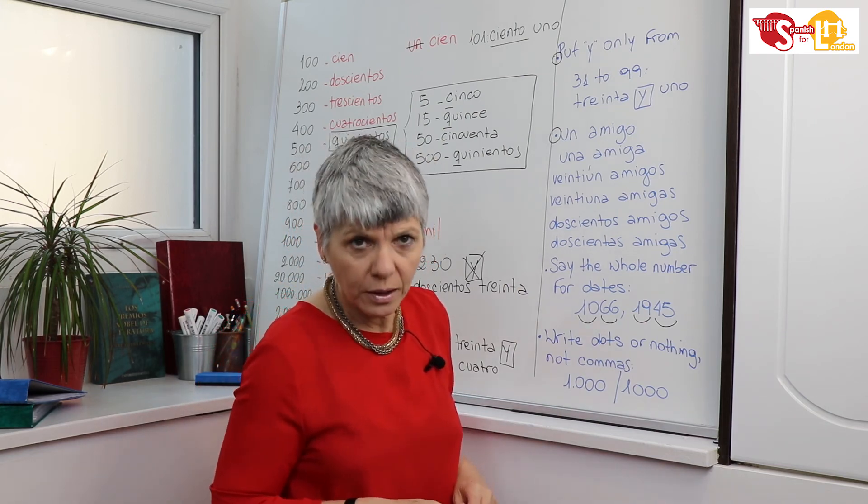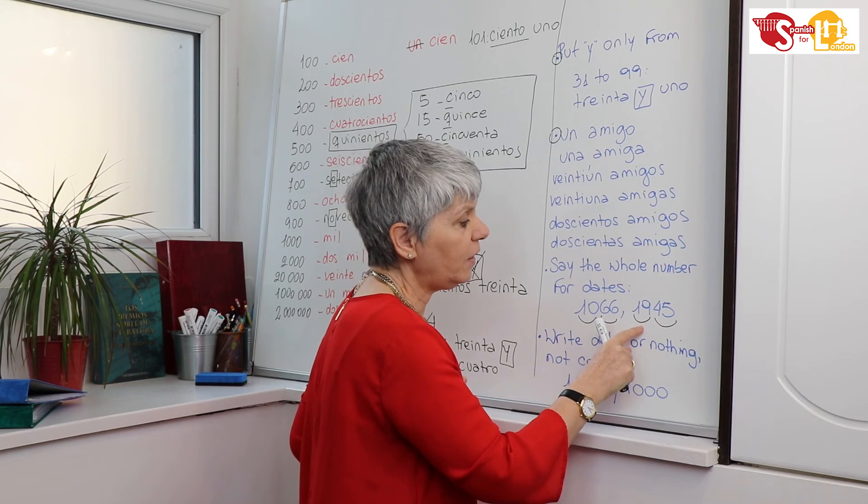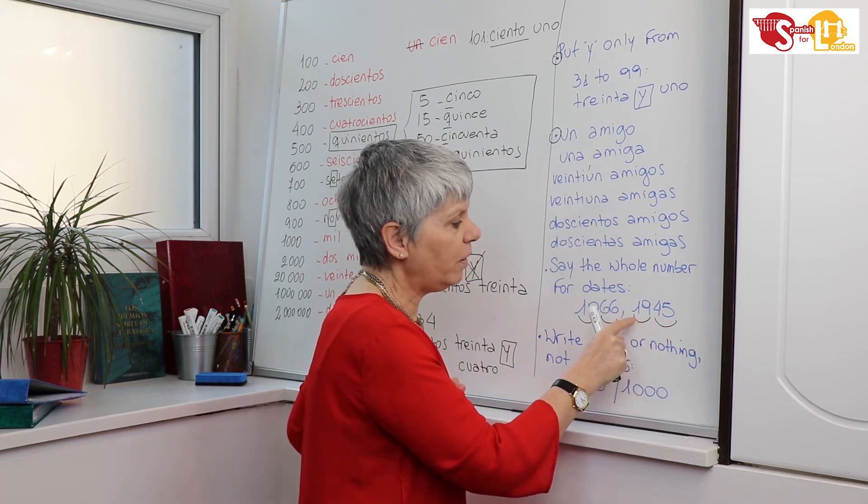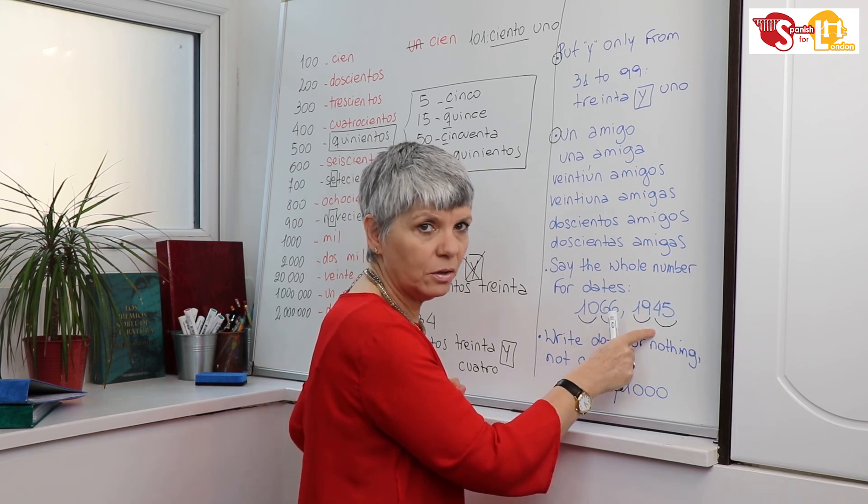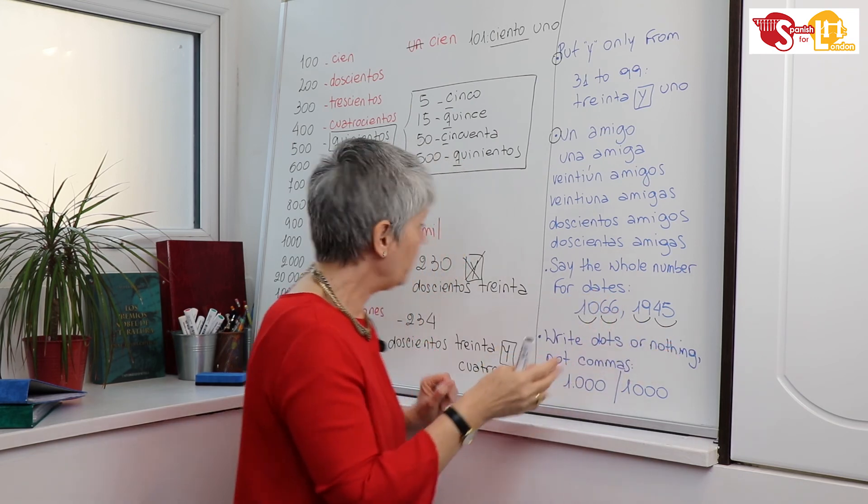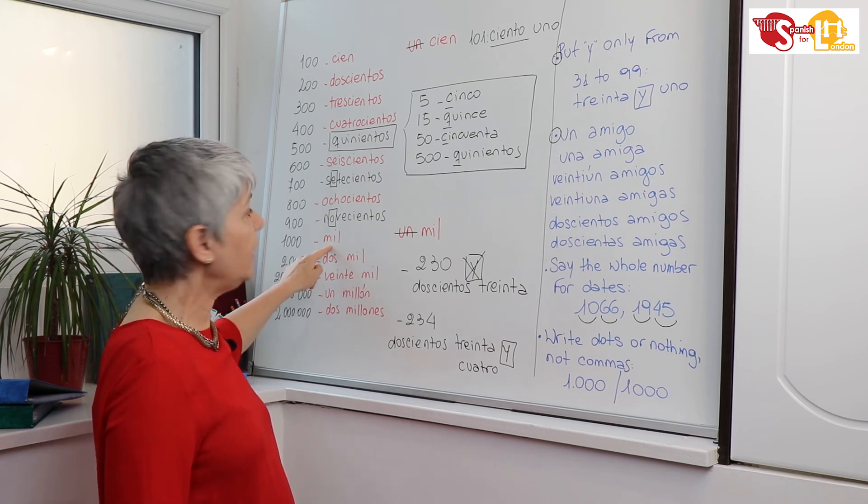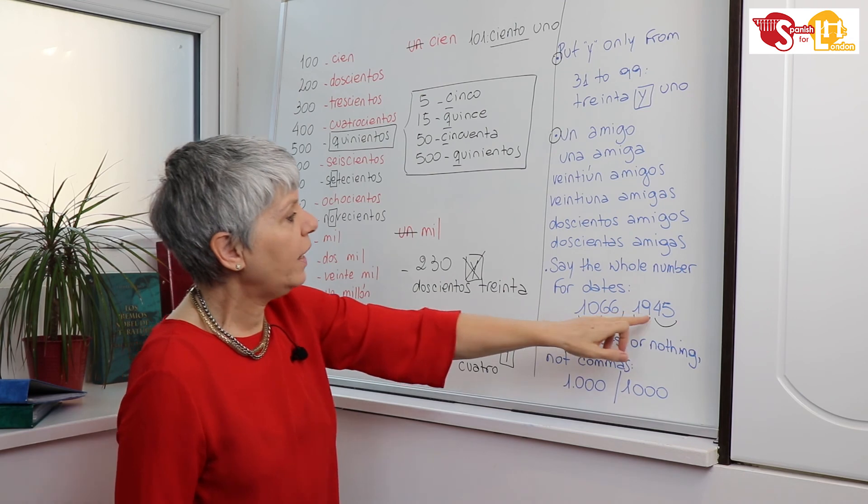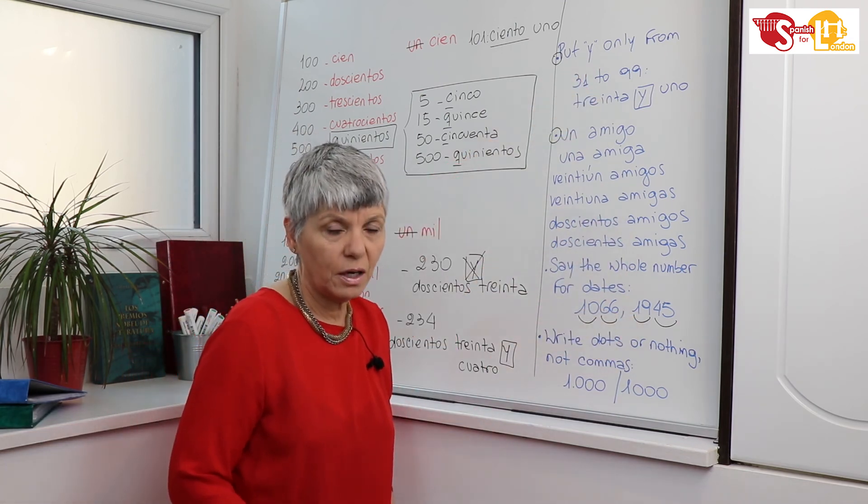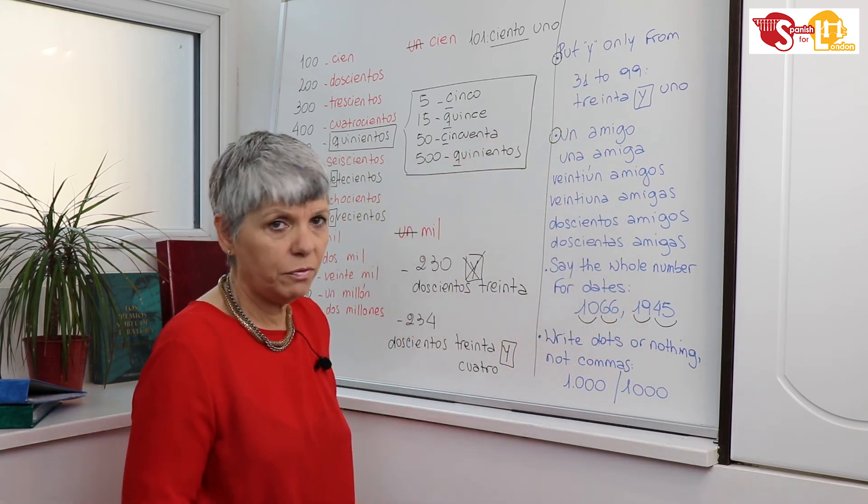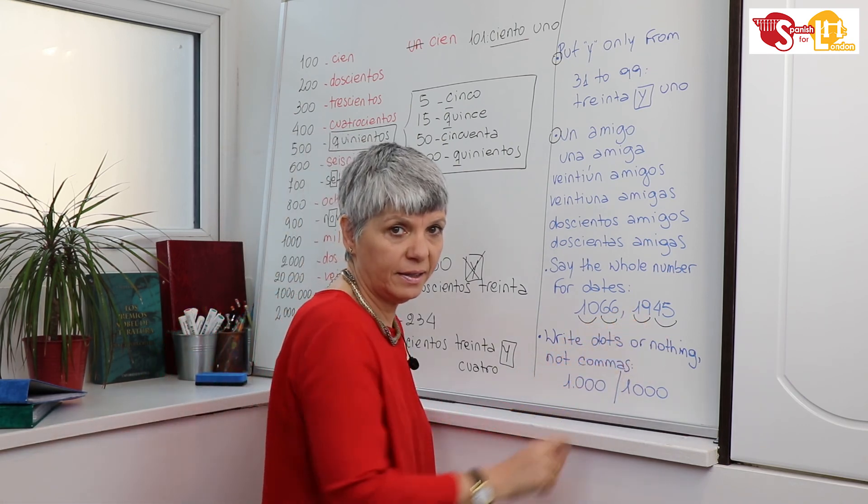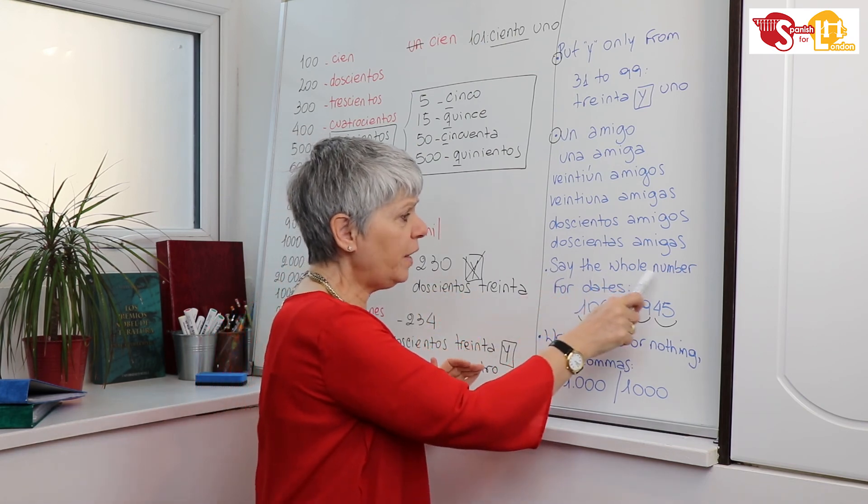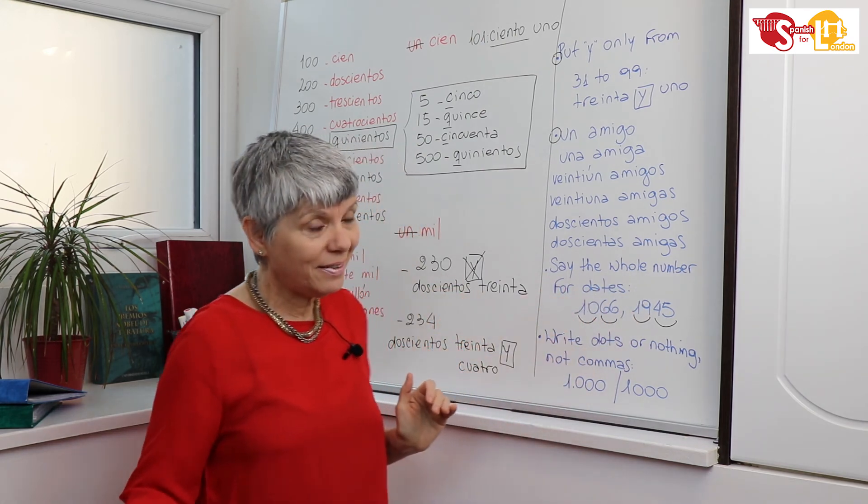So we don't say diez sesenta y seis. We say mil sesenta y seis. At the end of the Second World War, el final de la Segunda Guerra Mundial fue en... And I don't say diecinueve cuarenta y cinco (nineteen forty-five). I say one thousand nine hundred forty-five. So one thousand mil, nine hundred novecientos, cuarenta y cinco. El final de la Segunda Guerra Mundial fue en mil novecientos cuarenta y cinco. Ok? Remember that.